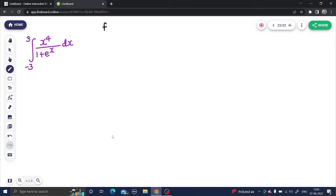We first say what is your f(x). My f(x) is x power 4 divided by 1 plus e power x. Then I check for f of minus x. That will be minus x power 4 divided by 1 plus e power minus x.